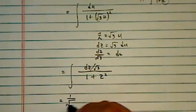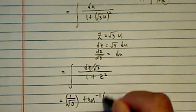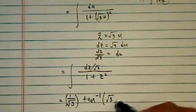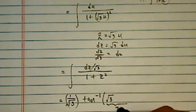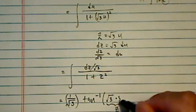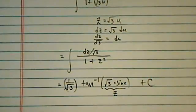One more step: 1 over radical 3, tangent inverse of z. Well what's z? It's radical 3 of u, this is z, and what's u? Let's put a u back in there, and that was a sine of x, and then plus a constant.